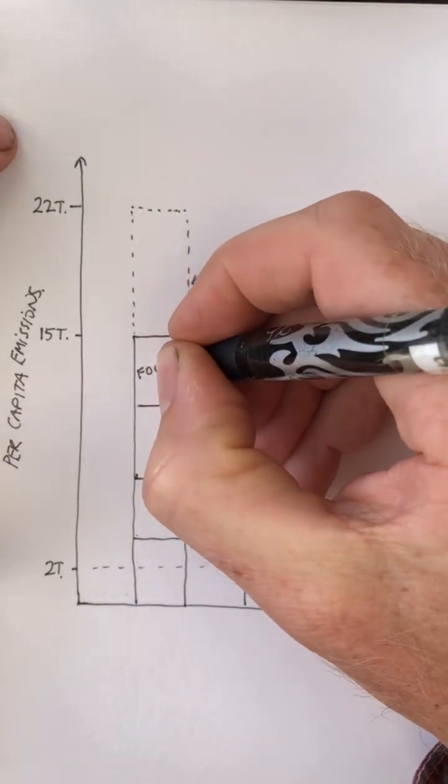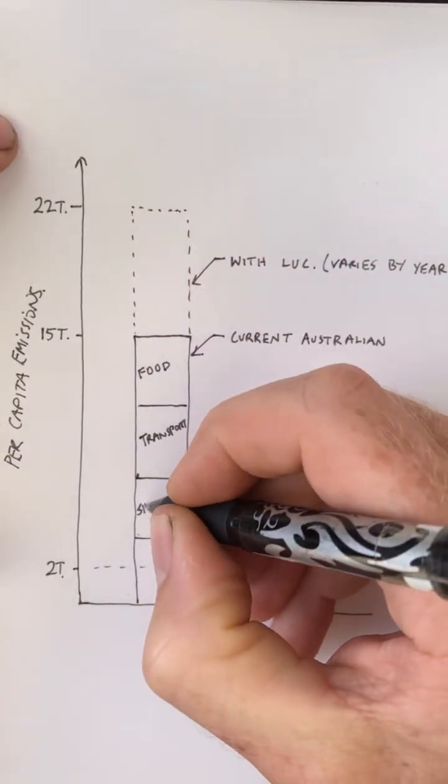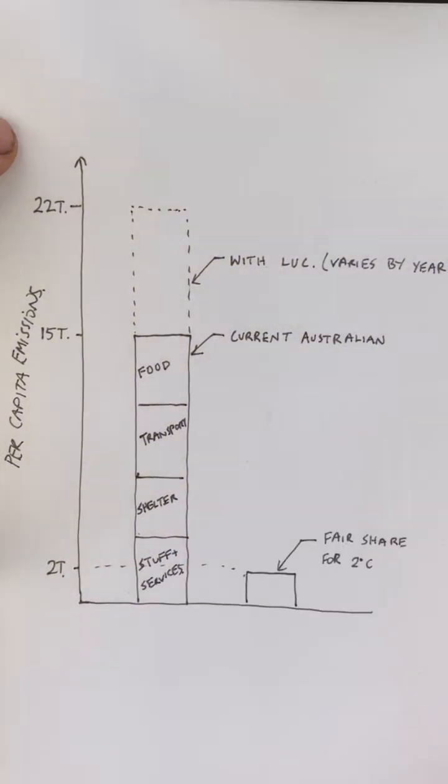The remainder is fairly evenly divided into food, transport, shelter, and other stuff, which is likely far greater but not included in official totals because the manufacturing doesn't happen in Australia.